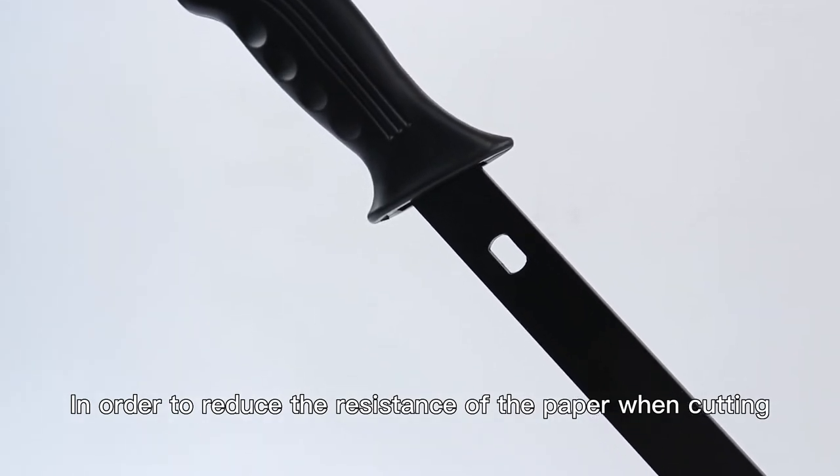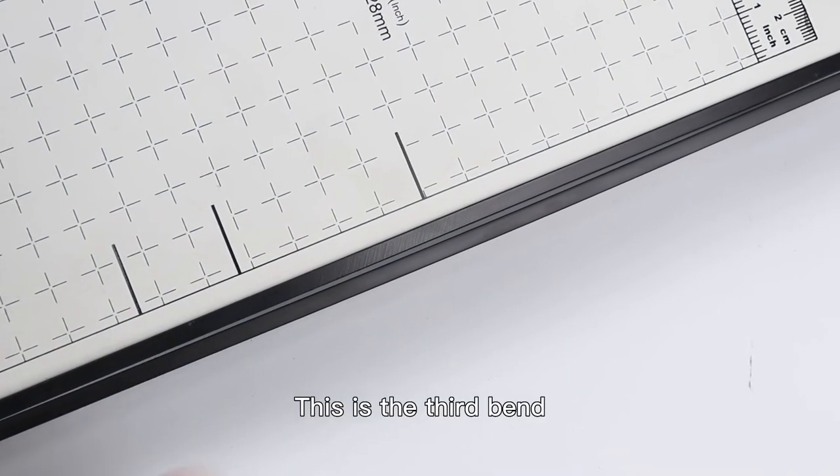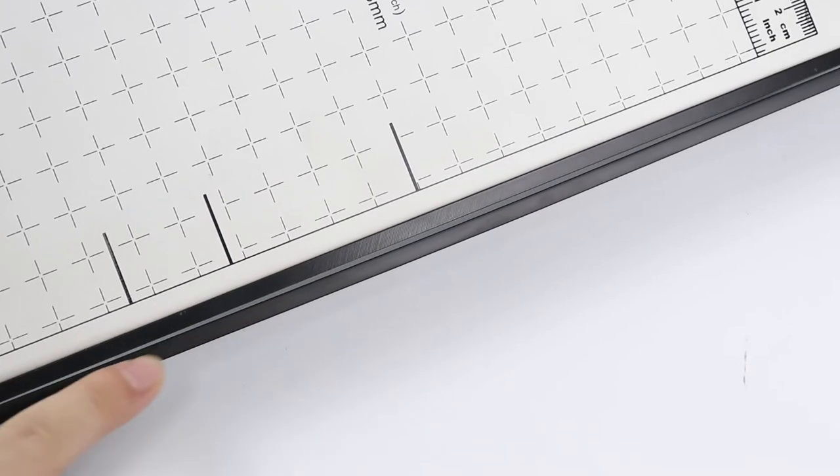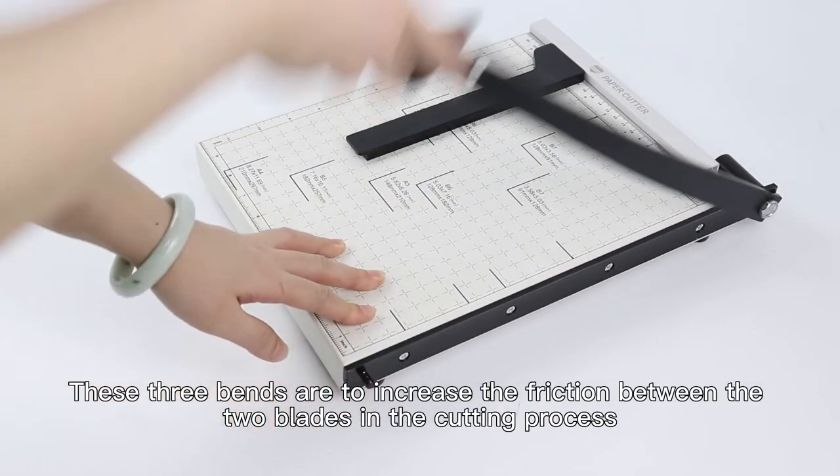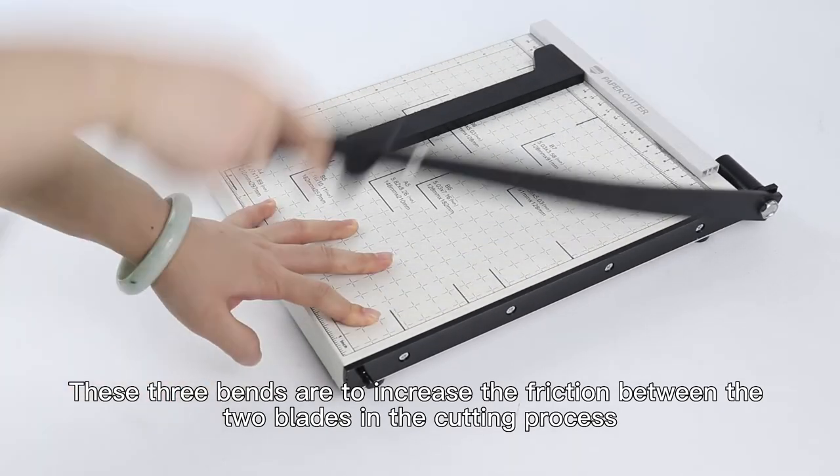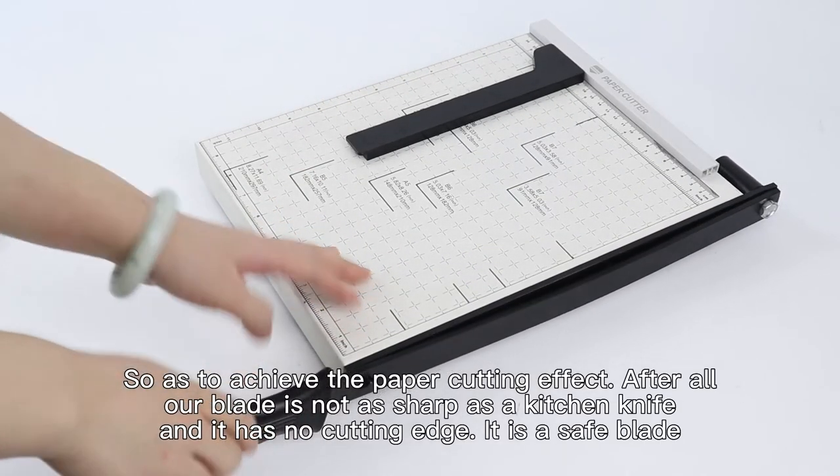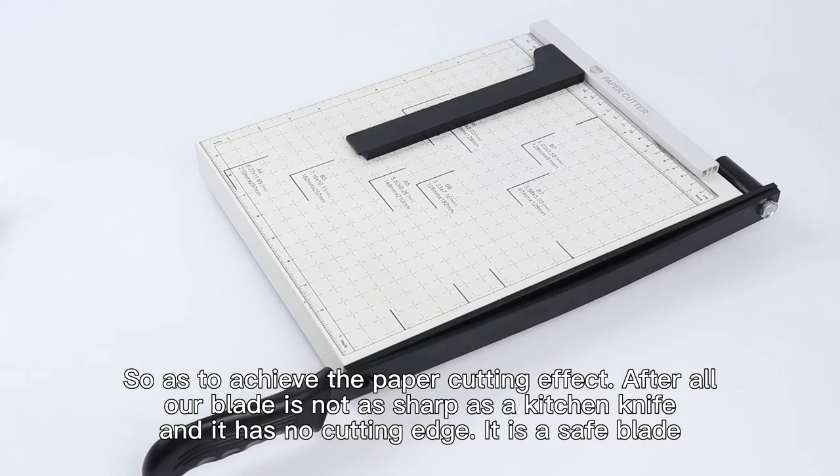This is to reduce the resistance of the paper when cutting. This is the third bend. These three bends are to increase the friction between the two blades in the cutting process, so as to achieve better cutting effect. After all, our blade is not as sharp as a cutting knife and has no cutting edge. It is a safe blade.